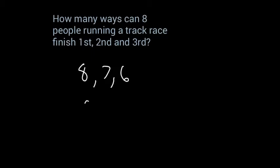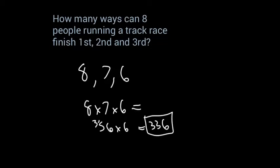So all I do is take that eight, seven, and six and multiply them. So eight times seven is fifty-six times six. Six times six is thirty-six, carry the three. Thirty plus three would be thirty-three. So that would be 336 ways that the eight track people could come in first, second, and third.